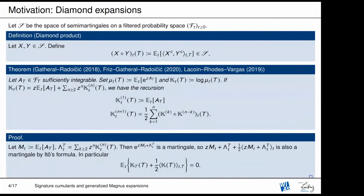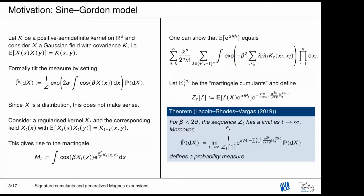Question from audience: Do you have a systematic way of picking out these counter terms — using cumulants as counter terms? Answer: Yes. In the case where you have a martingale with an exponential weight of this form, you can recursively compute them — this is what's on the next slide. So maybe it's a very special case, but you have some structure. What you need to introduce is, for semi-martingales more generally, a diamond product.